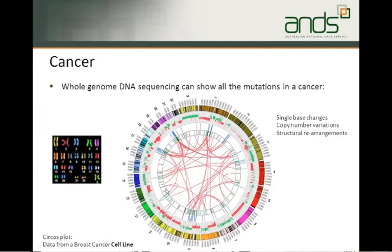The plot here is called the CIRCOS plot. It shows, on the left, those chromosomes all laid out nicely — one, two, three, four, and so on — and here they're represented going around the circle in clockwise fashion.